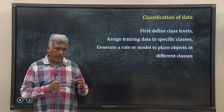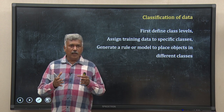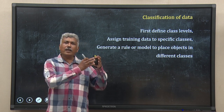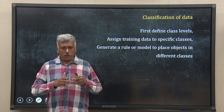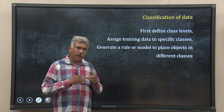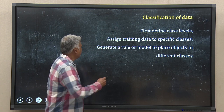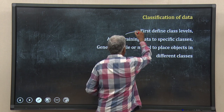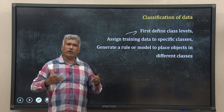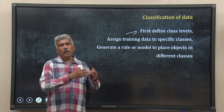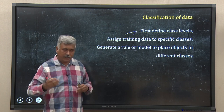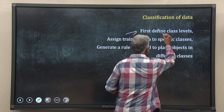In classification, we have an object or a data point that we want to put in a particular class. To do that, we have to start with a training data set and first define different classes. For example, we may define two different classes — like diseased person and non-diseased person. So we will have two class labels.